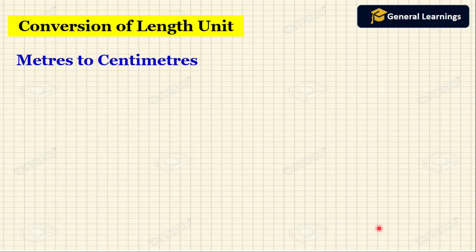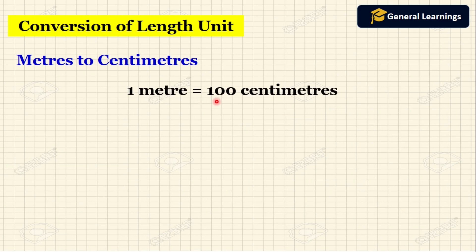First we are going to see how to convert meters to centimeters. 1 meter equals 100 centimeters. To convert meters to centimeters, multiply the number of meters by 100 and change the unit to centimeters. So to convert meters to centimeters we need to multiply by 100.